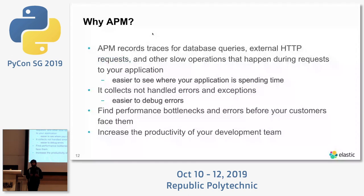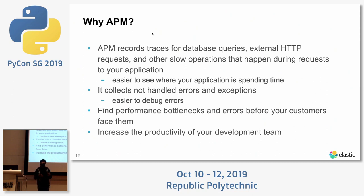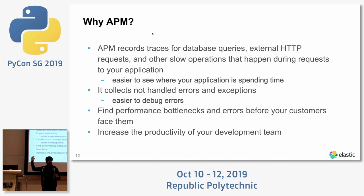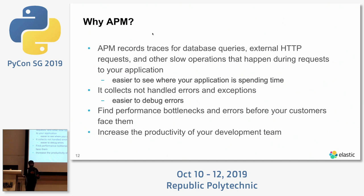APM helps you find performance bottlenecks in your app. It can identify slow HTTP requests, I/O operations, and database queries — for example, which MongoDB or MySQL query is taking more time. Through distributed tracing, you can visually see where a span is dragging a request for a longer time. If you're working on a microservice-based architecture, debugging gets really difficult, and APM helps a lot with distributed tracing.